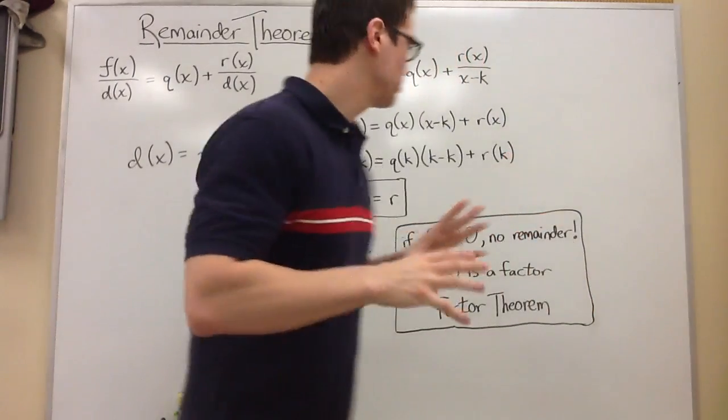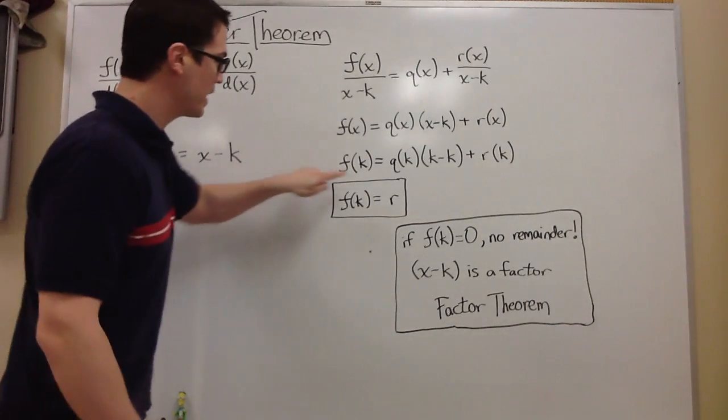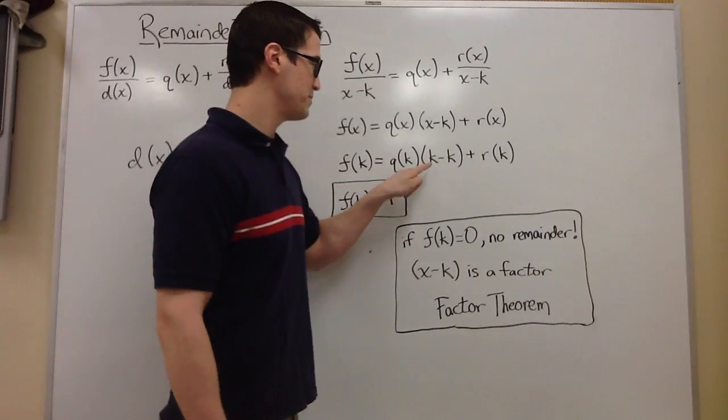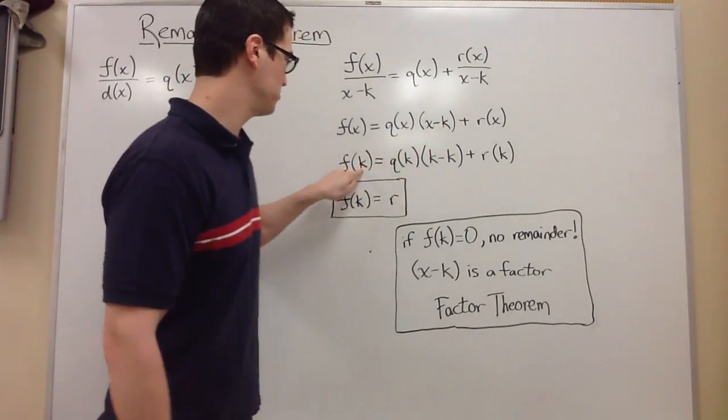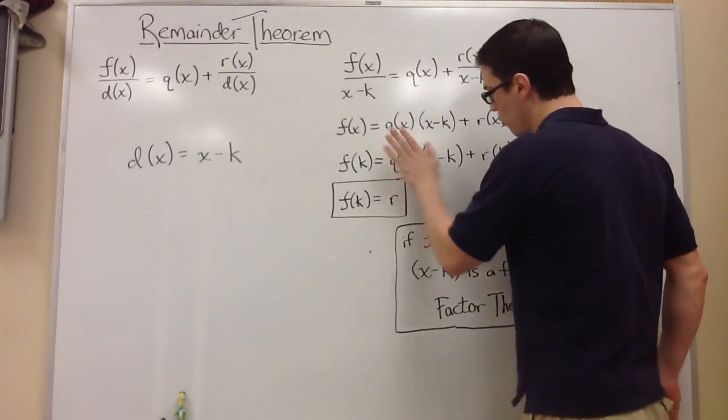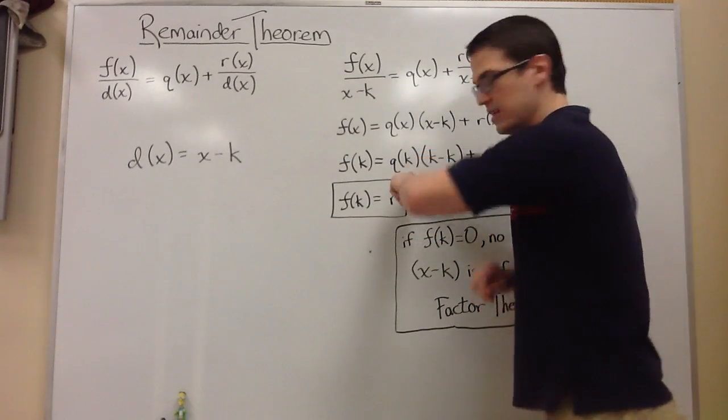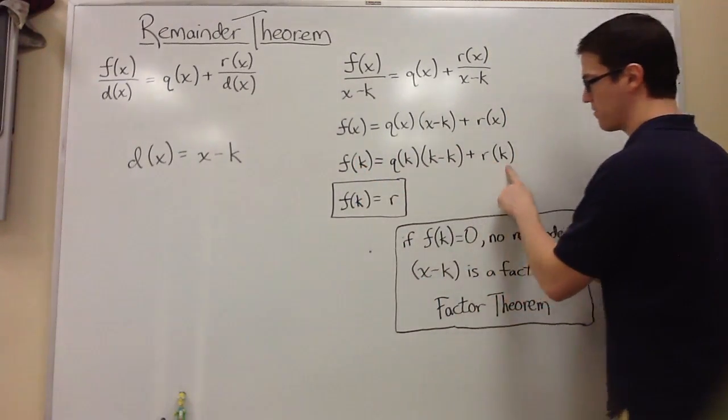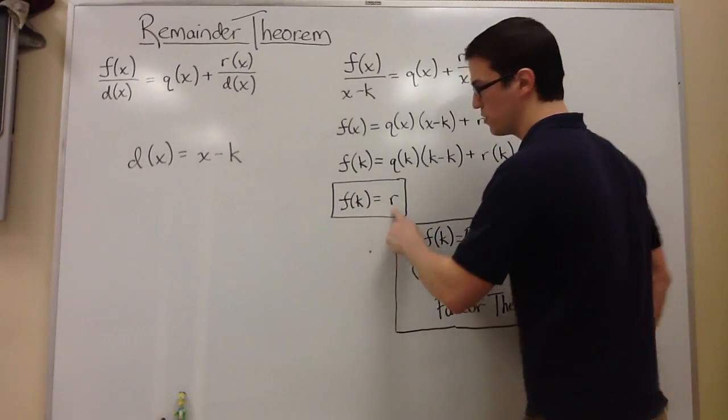Now I'm going to input the k value into my function. So now I have f of k equals q of k times k minus k. k minus k is 0, so this whole thing basically cancels out, because 0 times any number is going to be 0. So you're left with f of k equals r of k, or equals r, the remainder. So f of k is actually equal to the remainder.